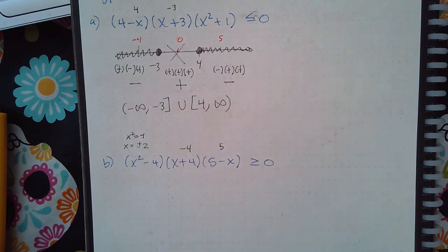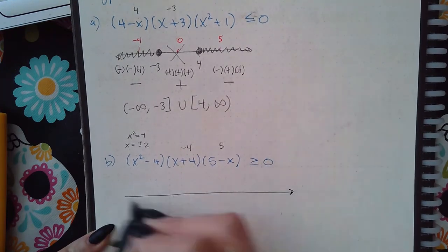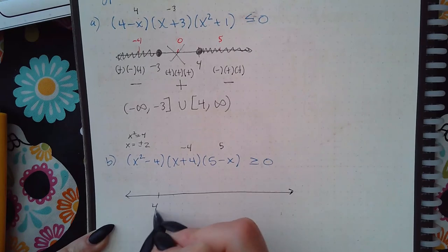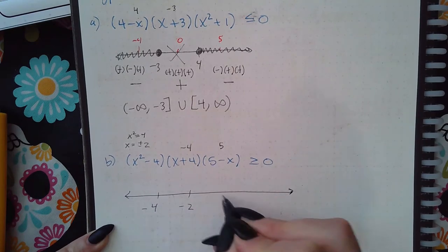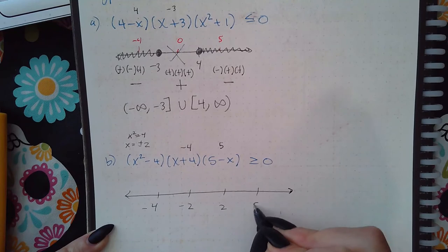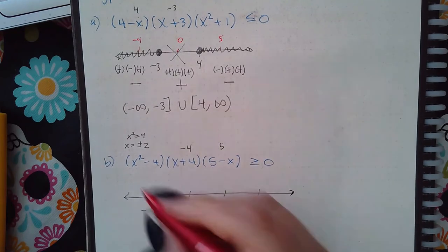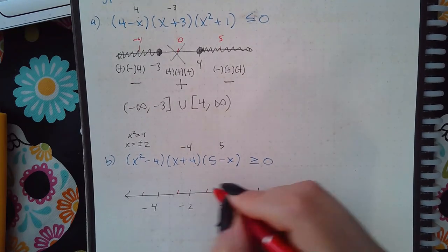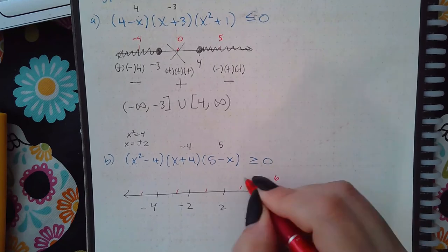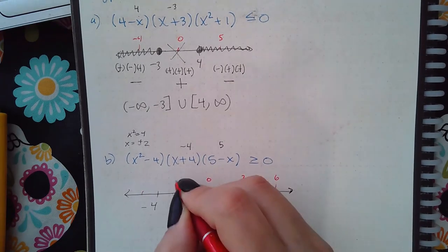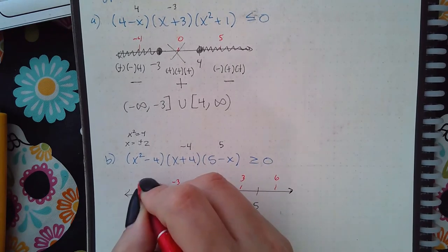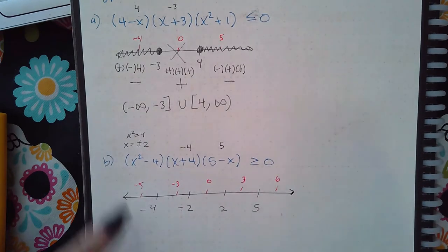So when I'm setting up my number line I actually have four values I need to include here: negative 4, negative 2, 2, and 5. Which means I'm going to have a lot of things to test. So 6, 3, 0, negative 3, and negative 5. So we're going to plug them in.